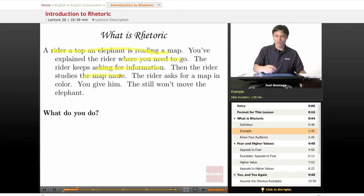And then he says, well this is a nice map but I want a little bit more information. And so you give the rider more information and the rider just keeps reading the map. You give him a map in color and he keeps reading. Now this rider is still not going to move that elephant. So what do you do?